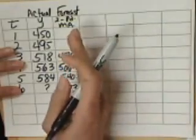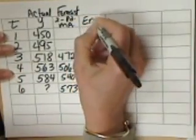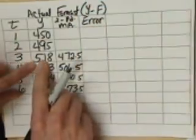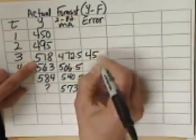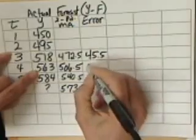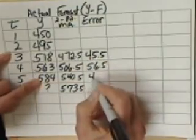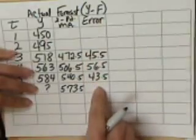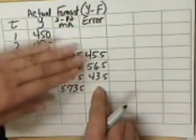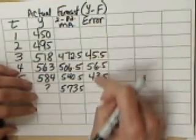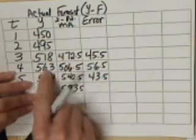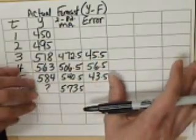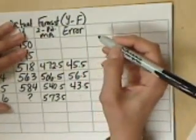Now let's compute the error for this forecasting model. Error is actual minus forecast: 518 minus 472.5 is 45.5; the next difference is 56.5; and this one is 43.5. If you add this column up, that's called bias — it's all your error terms added together. In this case all error terms are positive, meaning our model underestimated the actual value every time.